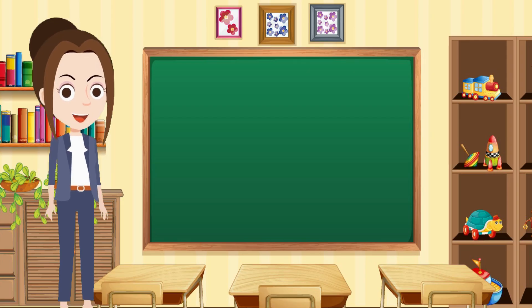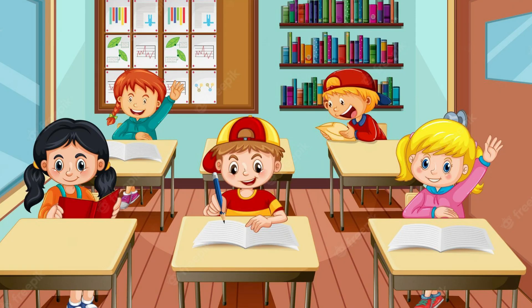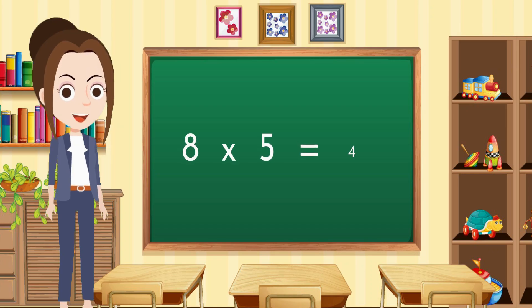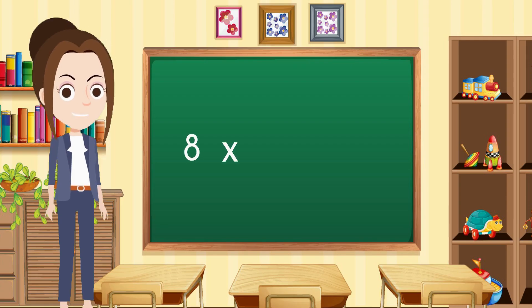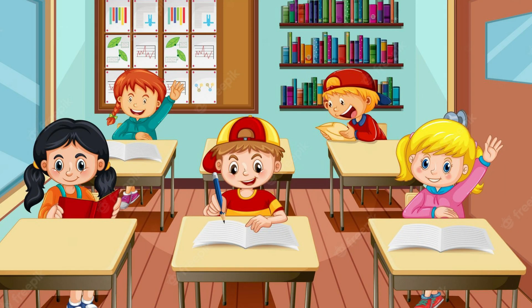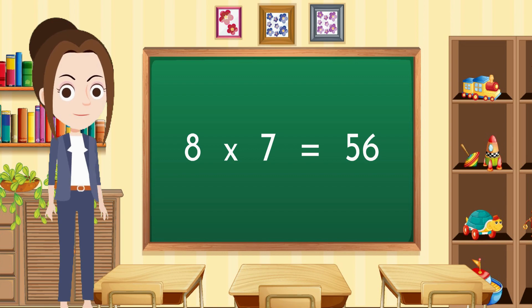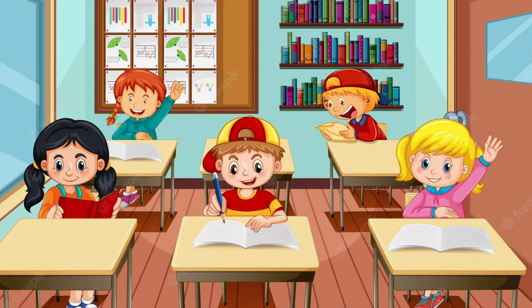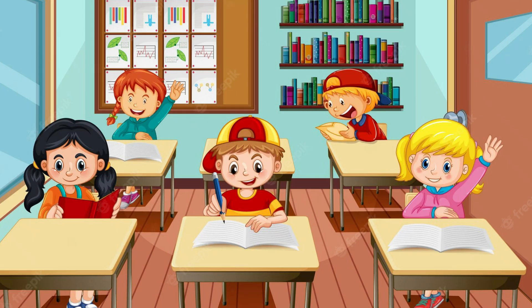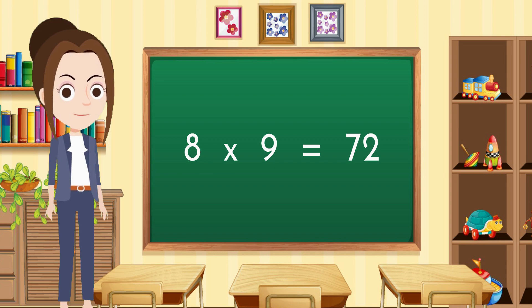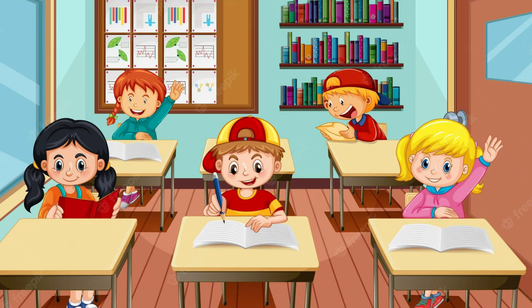Eight fours are thirty-two. Eight fives are forty. Eight sixes are forty-eight. Eight sevens are fifty-six. Eight eights are sixty-four.